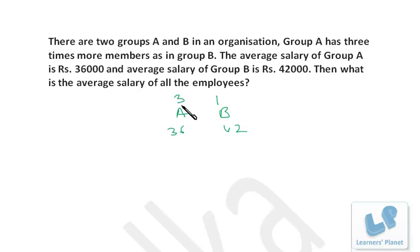A has three times more members than group B, so the average will be closer to 36. Now divide this difference of 6 into the ratio 3 to 1.